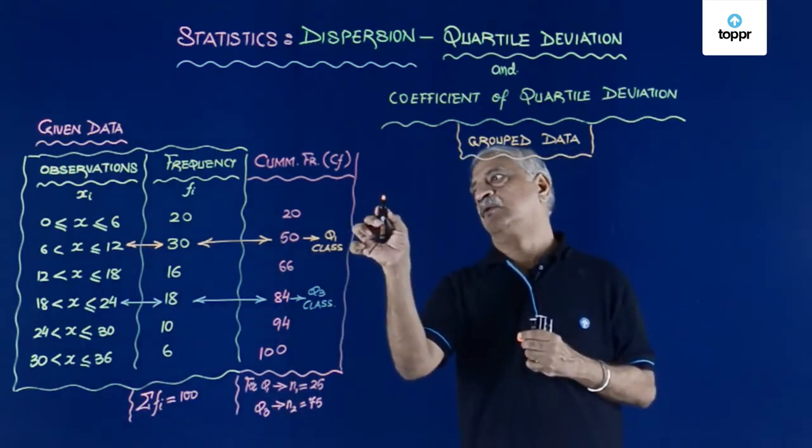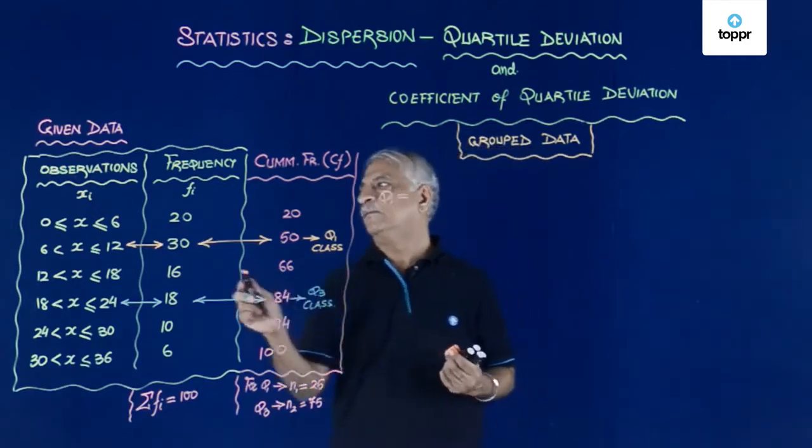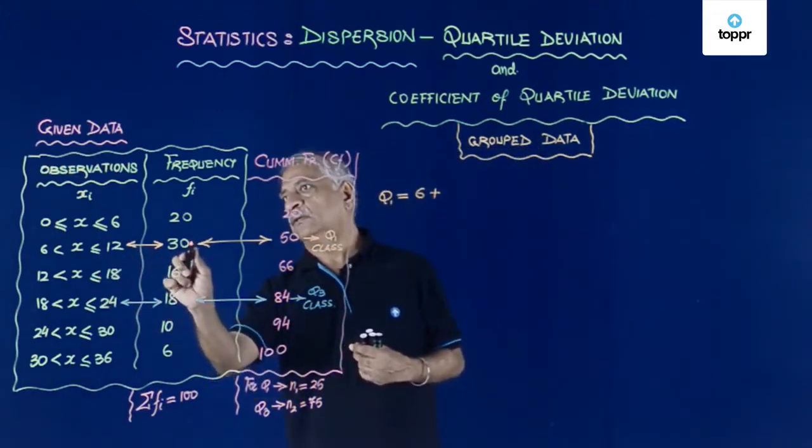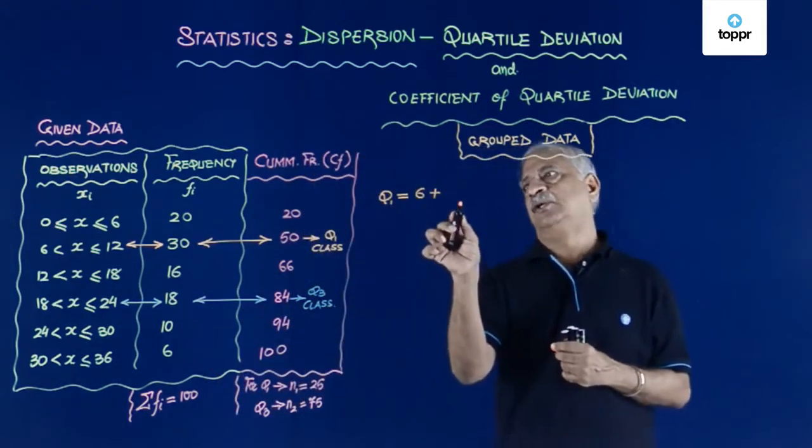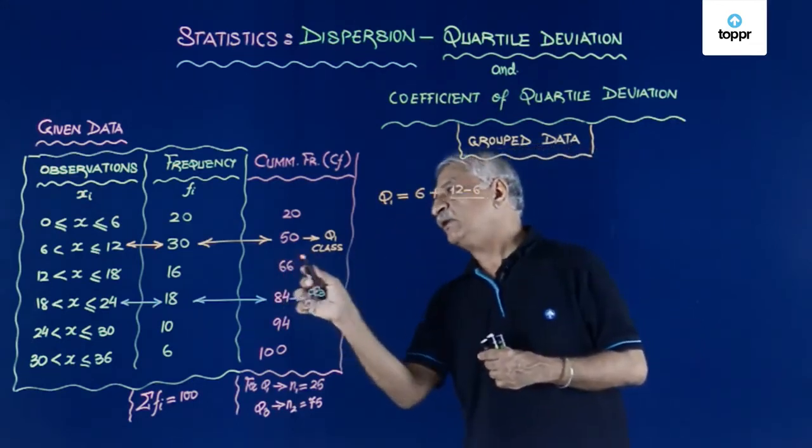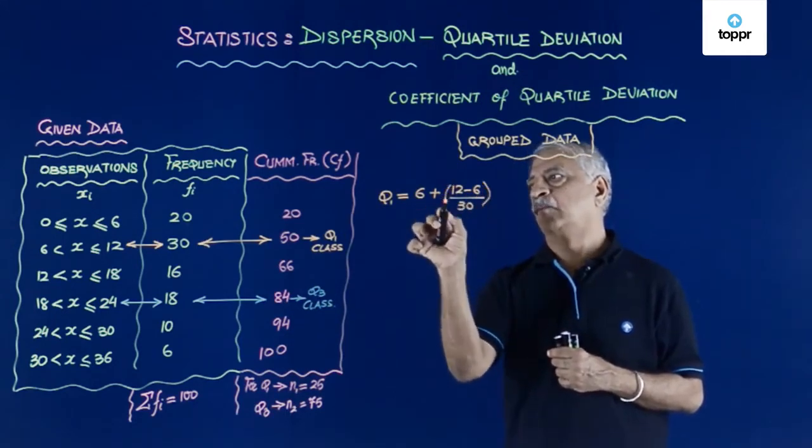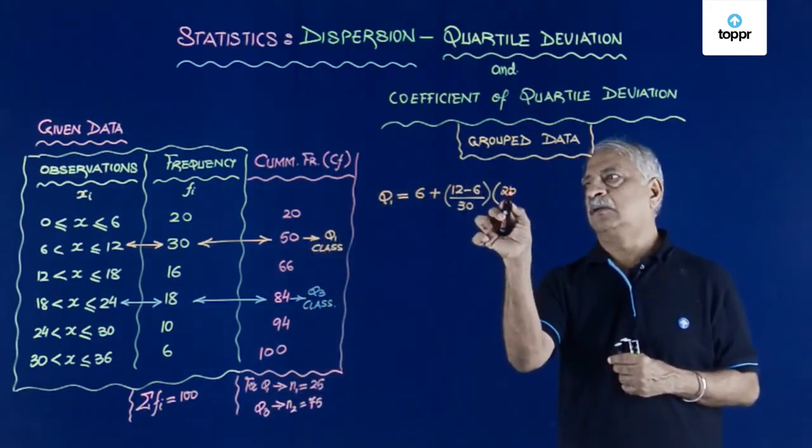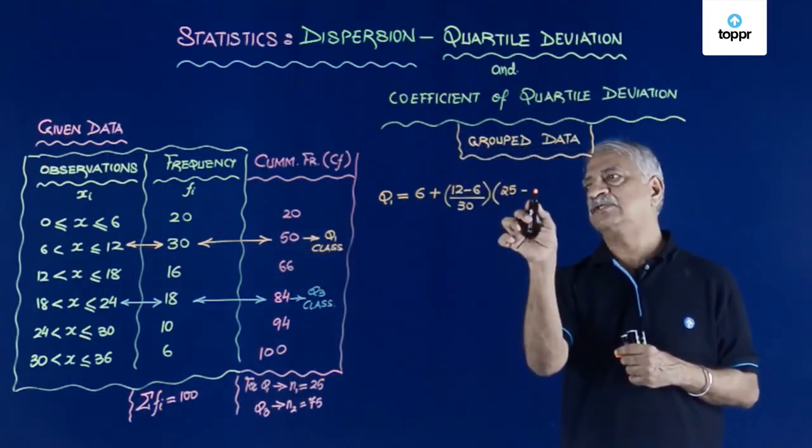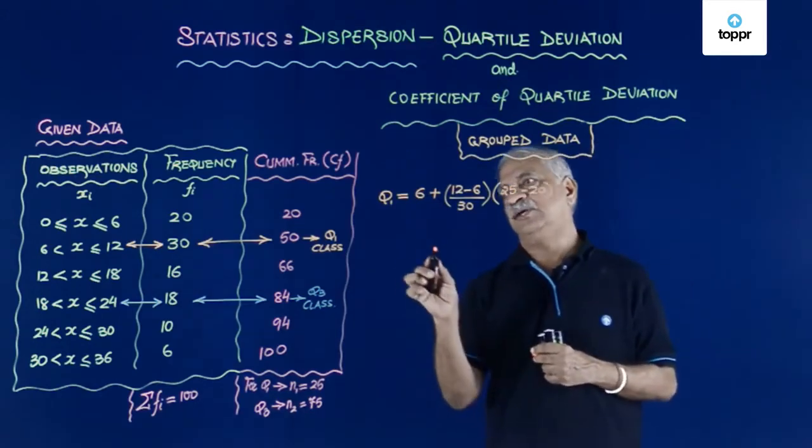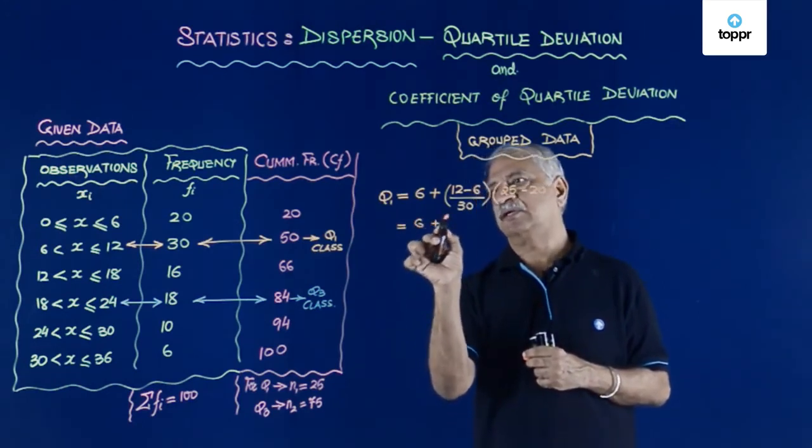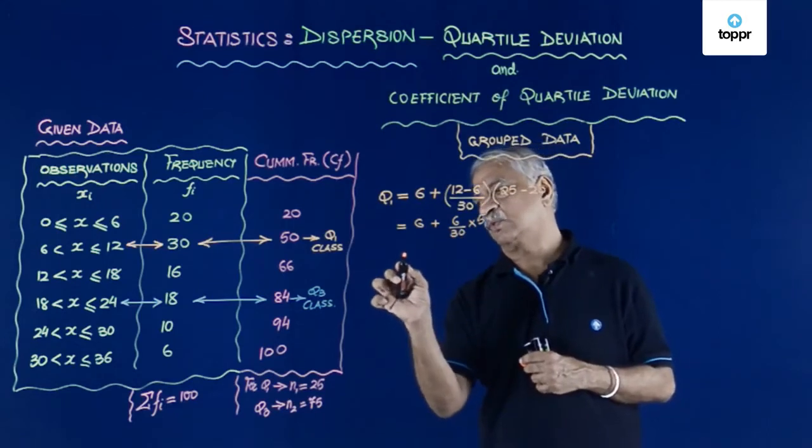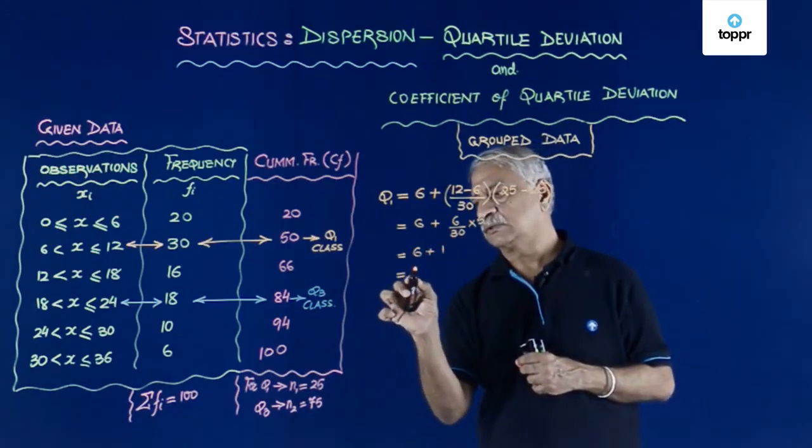So for Q1, we have 6 plus, I divide the interval by the frequency. So it is 12 minus 6 upon frequency is 30 multiplied by the number 25 minus the cumulative frequency before the frequency class, so that is 20. So this gives me 6 plus 6 upon 30 into 5, 6 into 5, 30 upon 30 that is 1. So it is 6 plus 1 which is equal to 7.